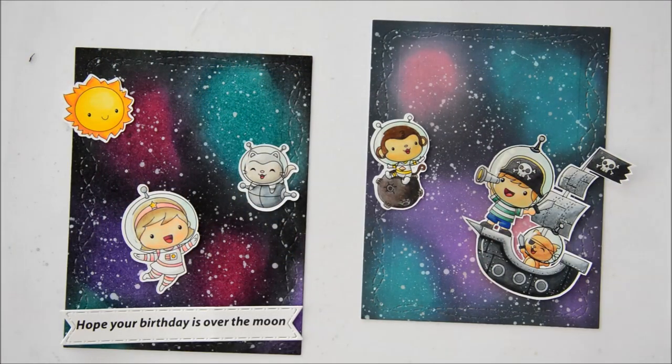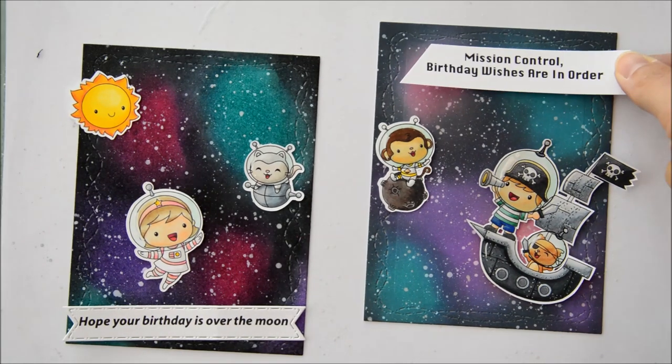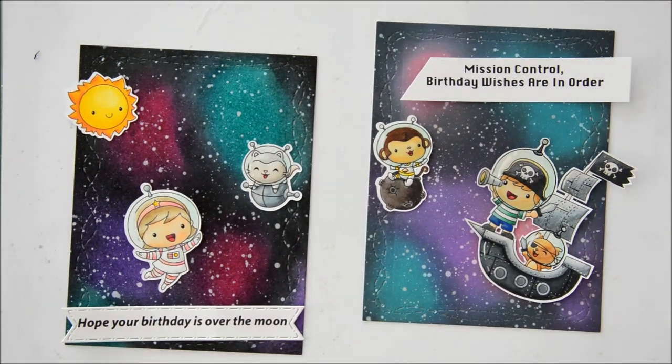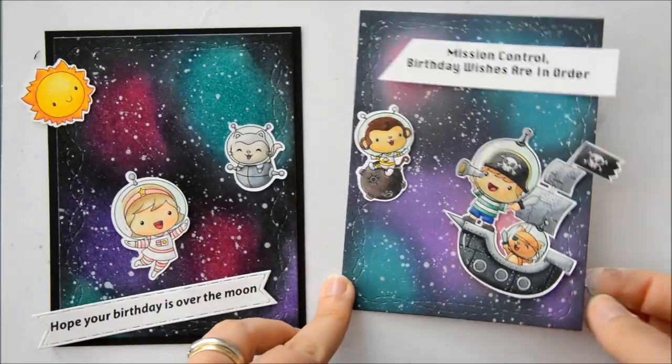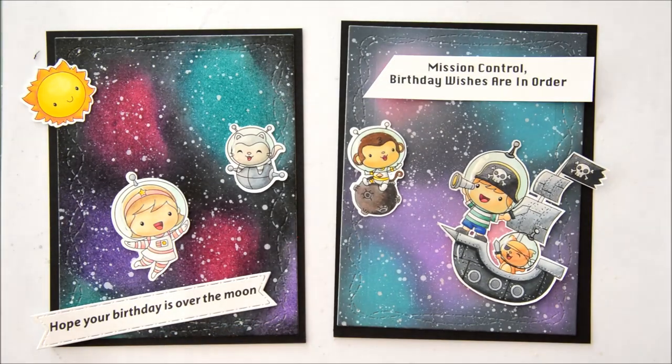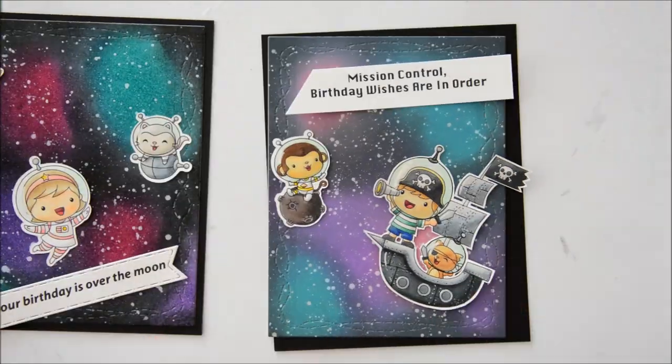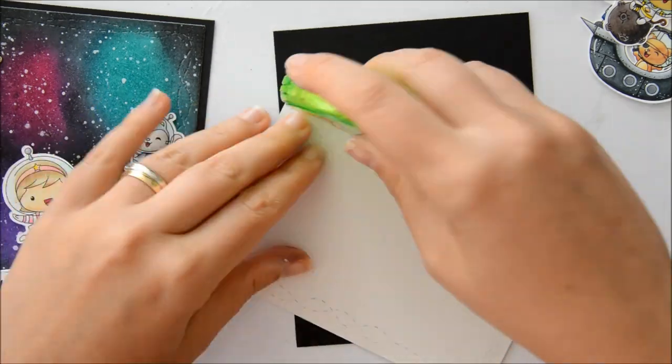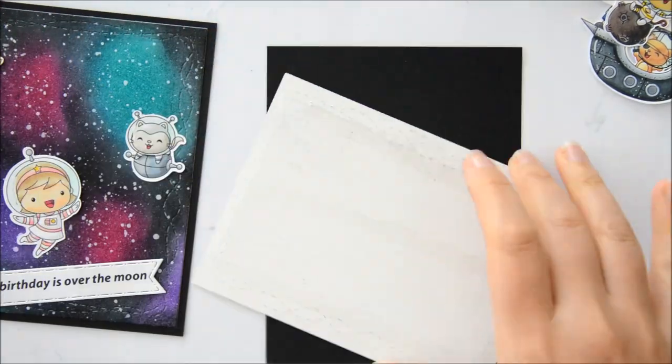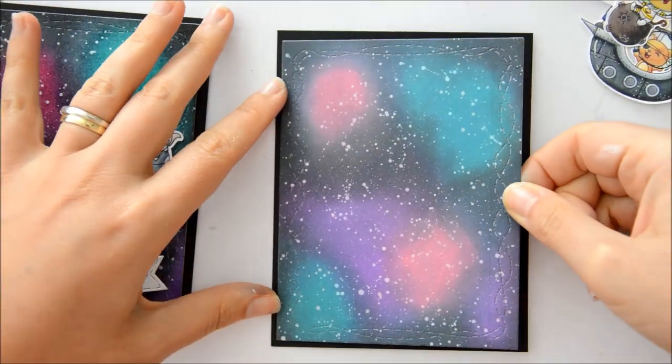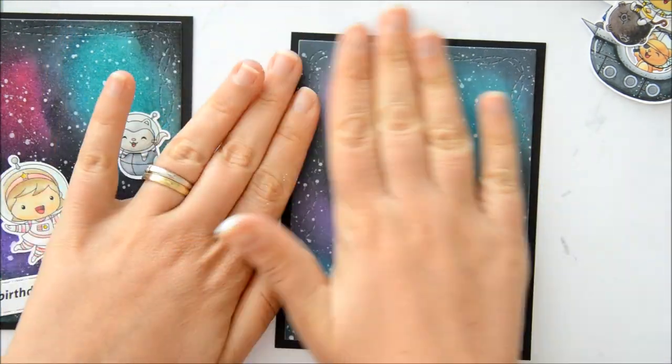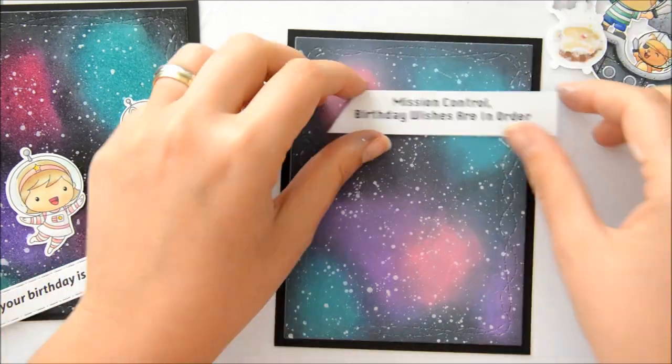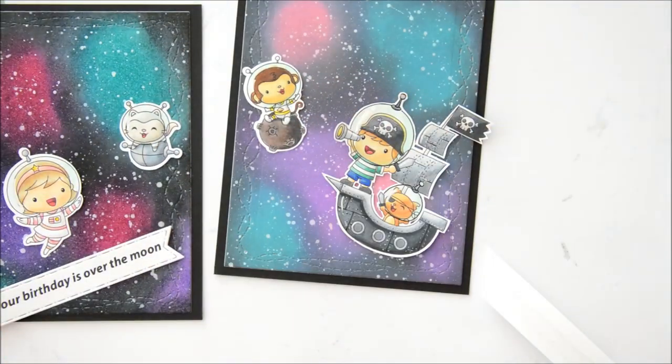So I trimmed down my panels using the largest die from the Crazy Stitched Frame dies by Crafting Desert Divas. And I am mounting my backgrounds on some black cardstock that I cut at a standard A2 size, so 4 and 1/4 by 5 and 1/2 inches. And I am using my Tonic Studios Funky Tape Runner to adhere my galaxy background to my card base. I am using dry adhesive at this point because the black cardstock that I am using as a base is not very thick and I didn't want it to warp.